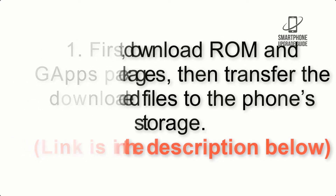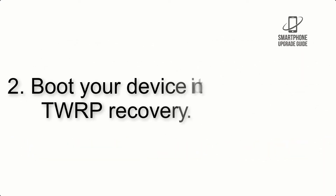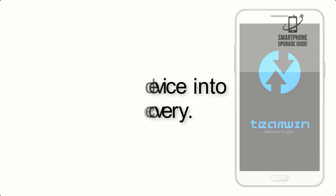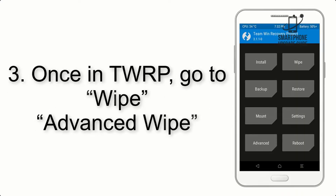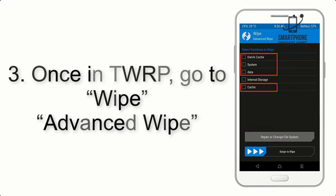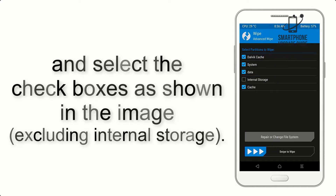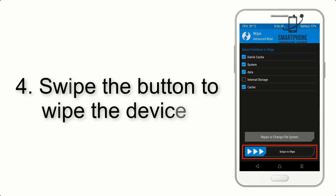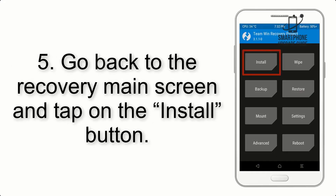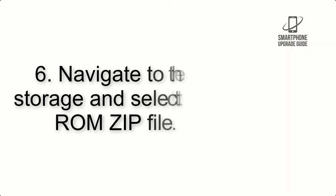Step 2: Boot your device into TWRP recovery. Once in TWRP, click on Wipe, then Advanced Wipe, and select the checkboxes as shown in the image, excluding internal storage. Step 4: Swipe the button to wipe the device. Step 5: Go back to the recovery main screen and tap on the Install button.